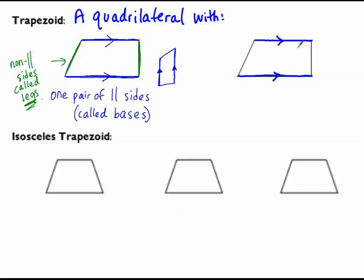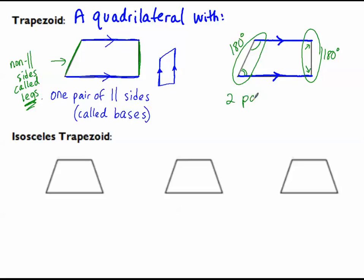When we draw those parallel sides, remember from studying parallel lines: angles next to each other — one on one parallel line, the other on the other parallel line — have a special relationship. They are supplementary, adding up to 180 degrees. So there are exactly two pairs of supplementary angles in a trapezoid.